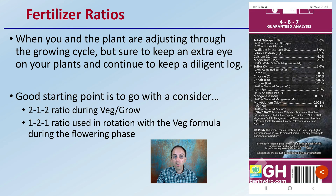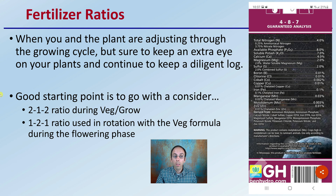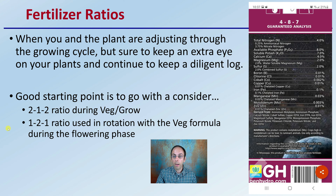When looking at fertilizer ratios and adjusting through the growing cycle, be sure to keep an extra eye on your plants and continue to keep a diligent log documenting what you fertilize and how much. A good starting point is a 2:1:2 ratio during the grow phase. When flipping to the flowering phase, adjust those ratios to a 1:2:1 ratio, used in rotation with the vegetative stage formulation. So it's twice as much nitrogen and potassium as phosphorus in veg, then twice as much phosphorus as nitrogen and potassium in bloom — but don't completely disregard the others; use them in rotation.